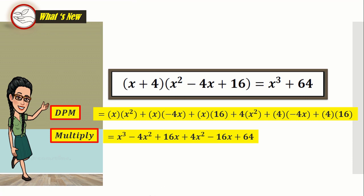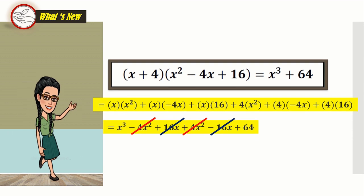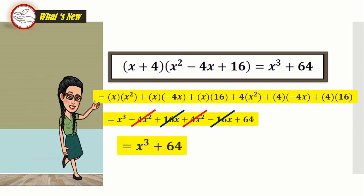And then, we are going to combine like terms. Okay? And? All right. So, what's left is x cubed plus sixty-four. Good job!